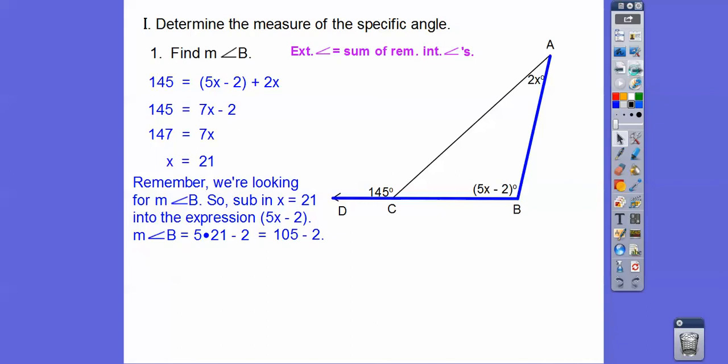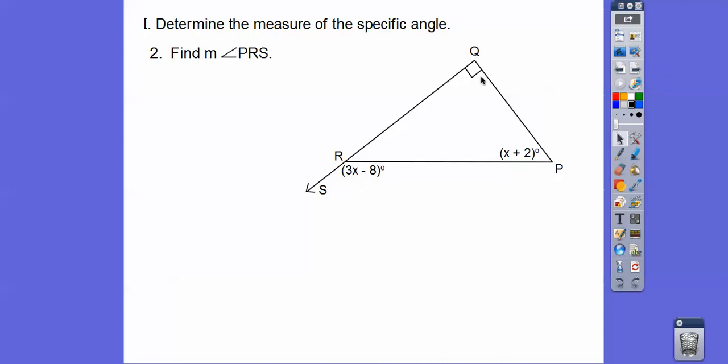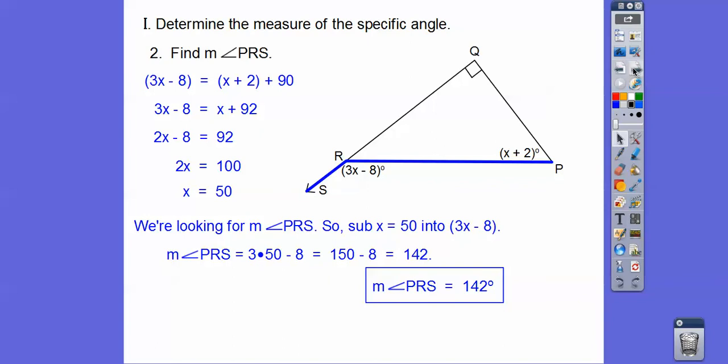Here we have an exterior angle and these are the two remote interior angles. So there's our equation. We combined the 2 and the 92. I'm going to subtract x, then add 8 and divide by 2. X equals 50. Now this says find angle PRS. We're looking for that guy right there. We're going to plug in 50. So 3 times 50 is 150. 150 minus 8 is 142.